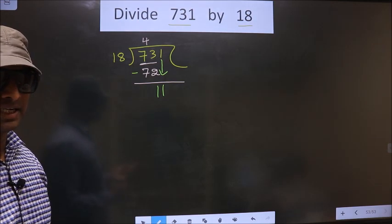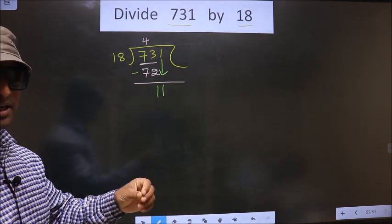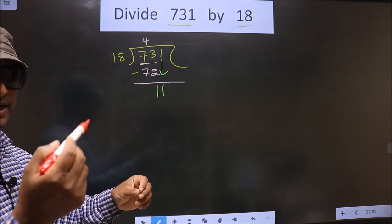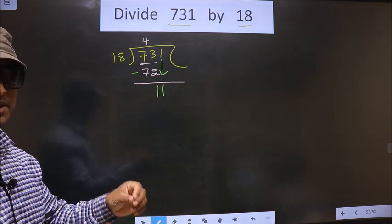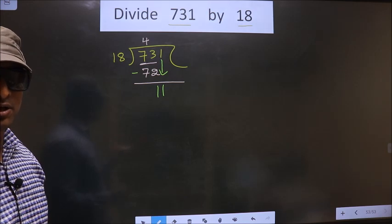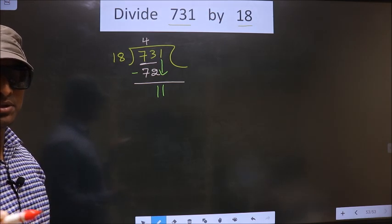I repeat: bringing the number down and putting a dot and taking 0 both at the same step is wrong. You are not supposed to do that.